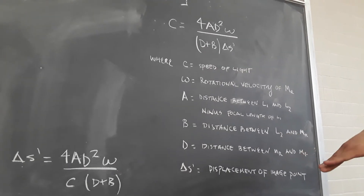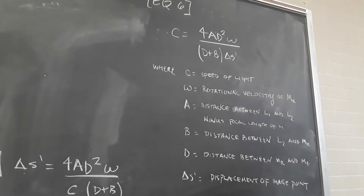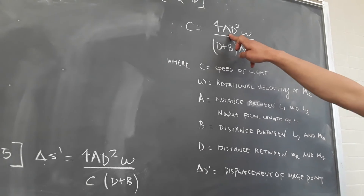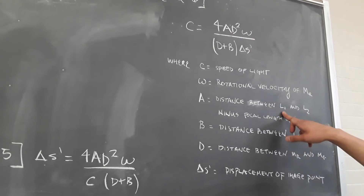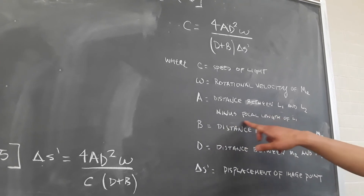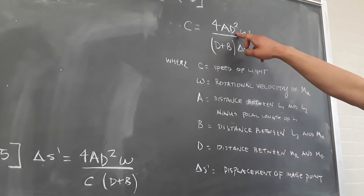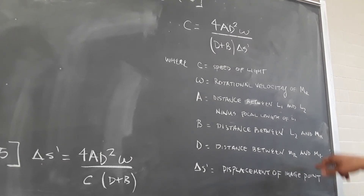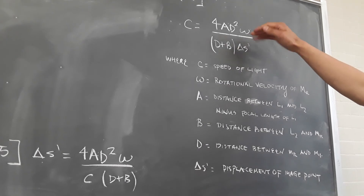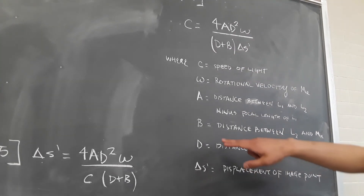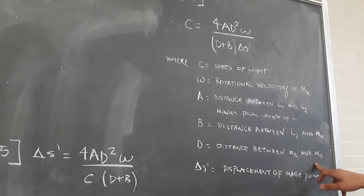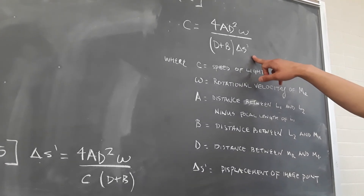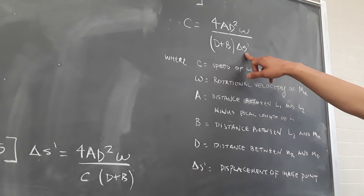This is the equation we'll use to calculate the speed of light. All the variables are things that we either know, can measure, or will know. The speed of light equals four times A — the distance between the first and second lens minus the focal length of the first lens — times D squared, where D is the distance between the rotating and fixed mirrors, times the angular velocity of the mirror, over D plus B times delta S prime, the change in our image point.